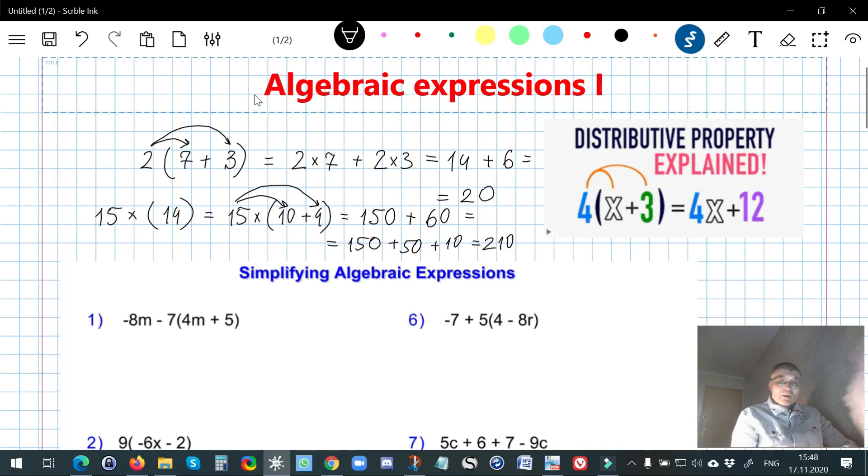As it is shown in this picture, distributive property is necessary when we deal with such objects as letters, as well as variables, as well as numbers. And in this case, 4 should be multiplied by both values written inside parentheses, and we get 4x plus 12.